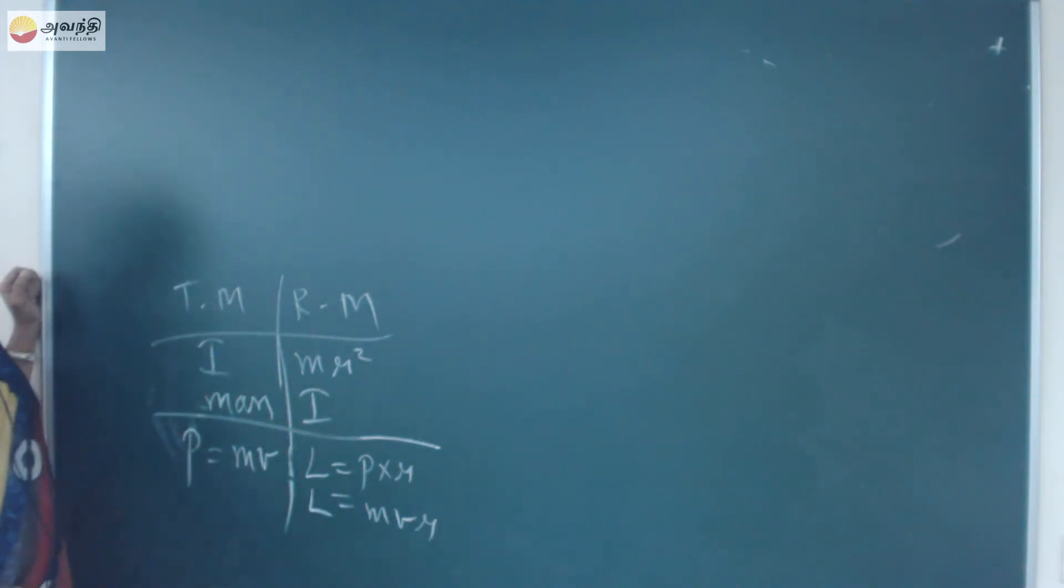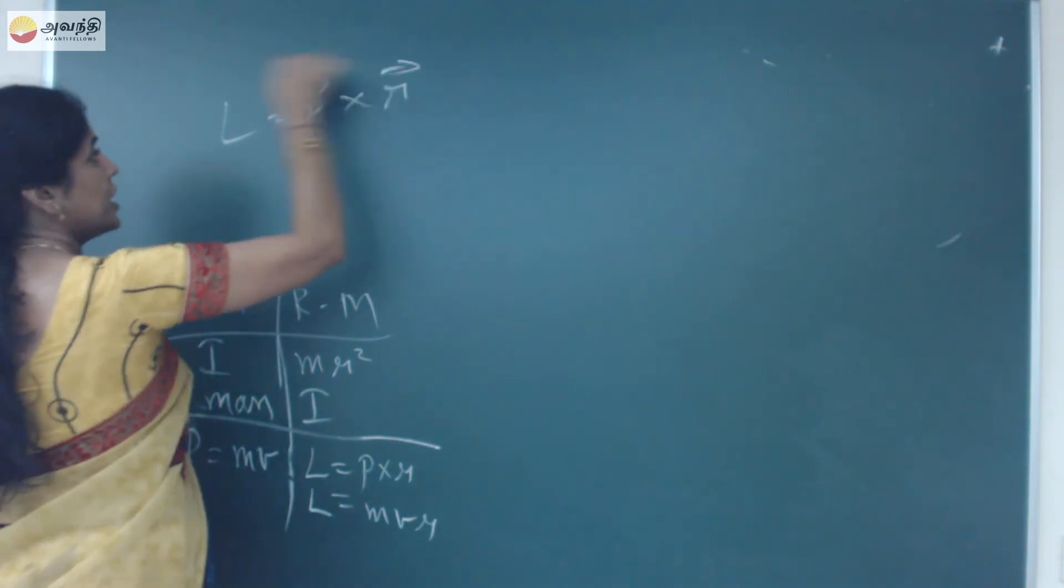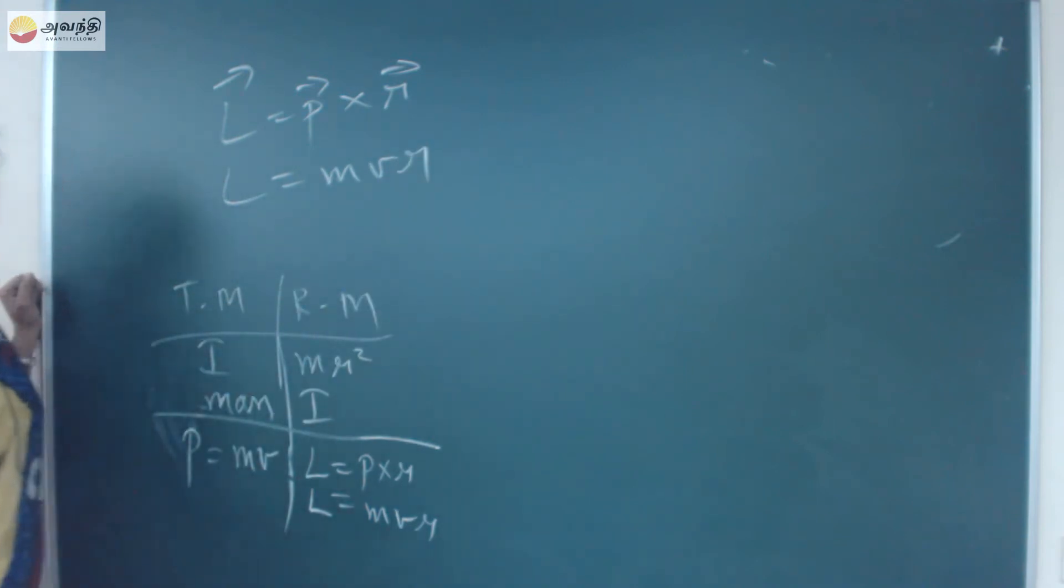So let us compare. Angular momentum is given by moment of linear momentum. It is given by the formula L equals M, V, R.